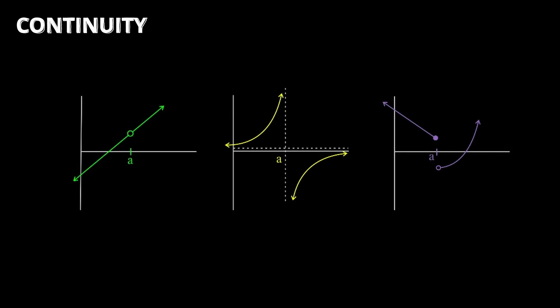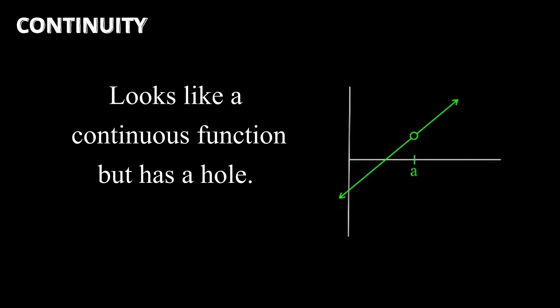Continuity. Sometimes, if these limits diverge or don't exist, discontinuities are made in our graph. There are three types of these discontinuities. The hole discontinuity, which looks like you have a continuous graph except for in one little point or hole.